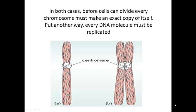In both cases, before cells can divide, every chromosome must make an exact copy of itself. Put another way, every DNA molecule must be replicated, so there's enough DNA to give the cells the right numbers of chromosomes.